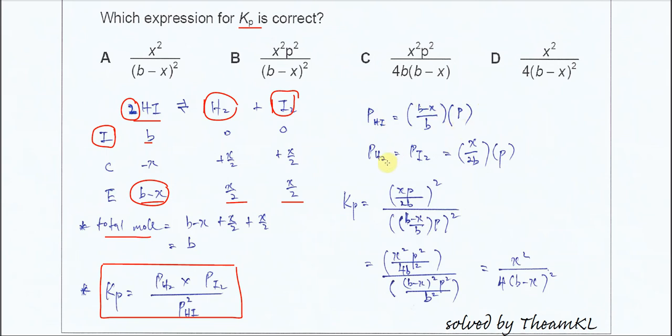Partial pressure of H2 and I2 same. So we need to get the mole fraction of these two. So it's X over 2 over B, which is X over 2B. This is the mole fraction of these two species times the total pressure, so we get the partial pressure for these three gases.